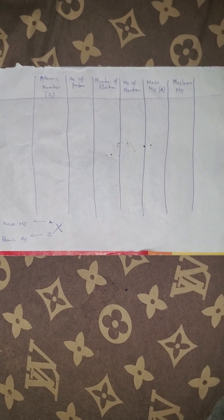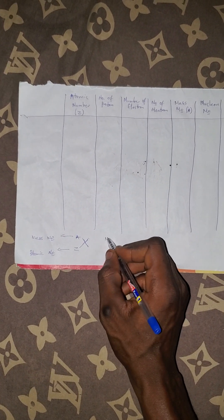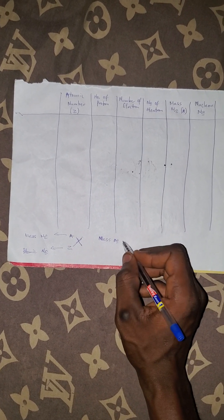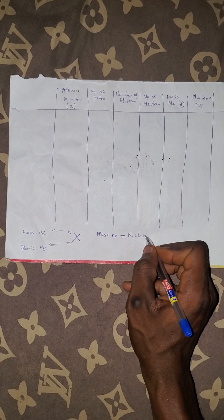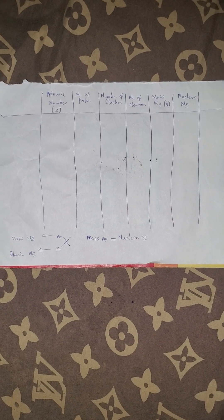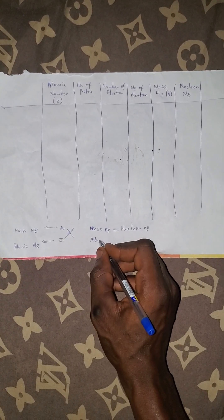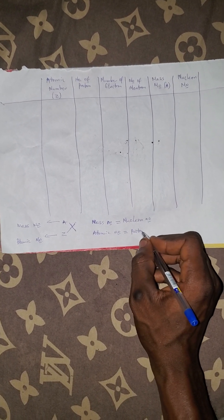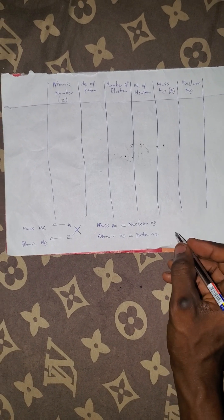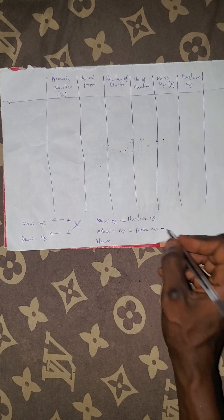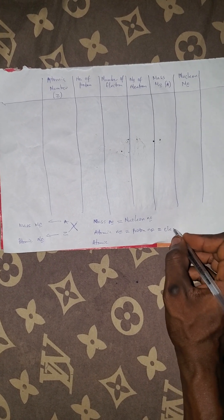Your mass number can also be known as nuclear number — nuclear, not neutron. And at the same time, the atomic number is the same thing as proton number. But there is also a case whereby atomic number is the same thing as proton number and at the same time as electron number.